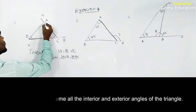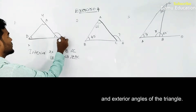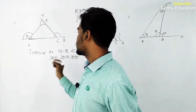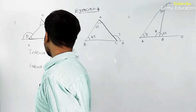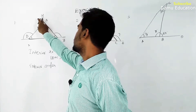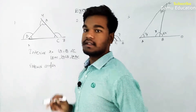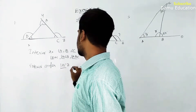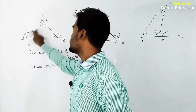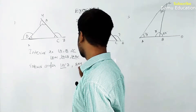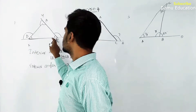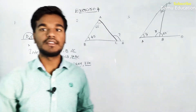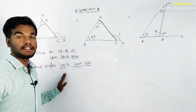Now, what are the exterior angles for this triangle? The exterior angles are angle YCZ, angle ACZ — you can take either one. Next, angle BAY, and then angle CBA. These are the interior and exterior angles: interior angles are inside the triangle, exterior angles are present outside the triangle.